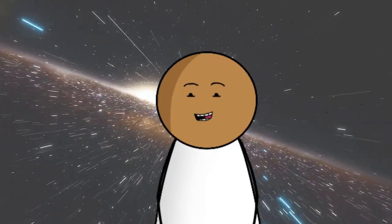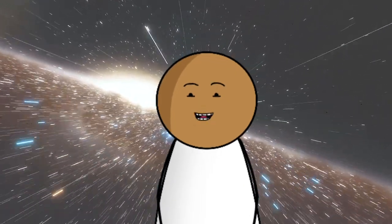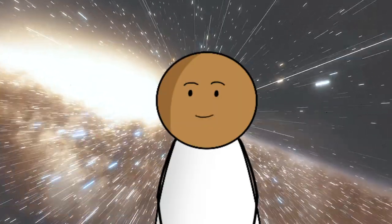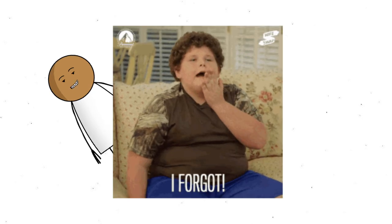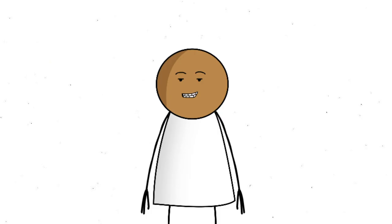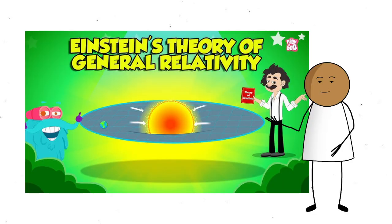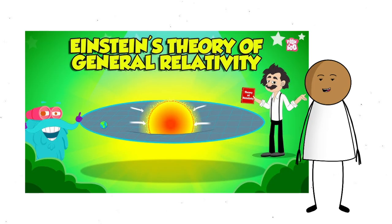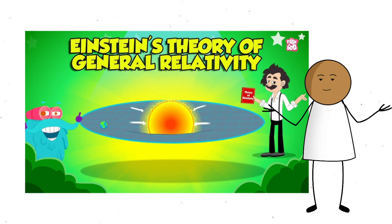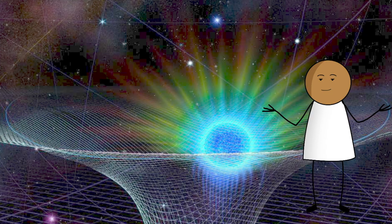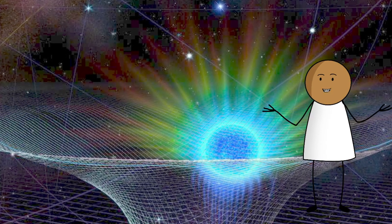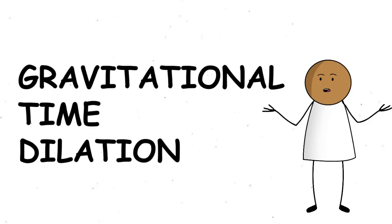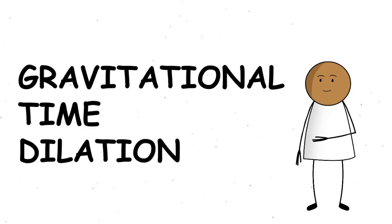Time in space doesn't work the way you think it does. Here on Earth, time feels pretty steady. You go to sleep, you wake up, you forget it's Monday. Simple stuff. But in space, time gets bendy. Thanks to Einstein's theory of general relativity, we now know that time can actually slow down, depending on how close you are to a massive object, like a planet or a black hole. This is called gravitational time dilation, and it's not science fiction. It's measurable.